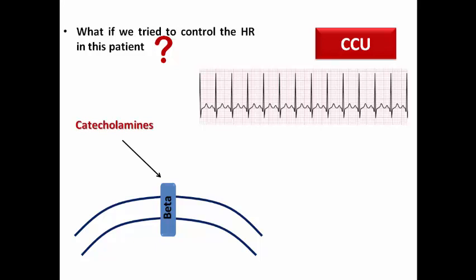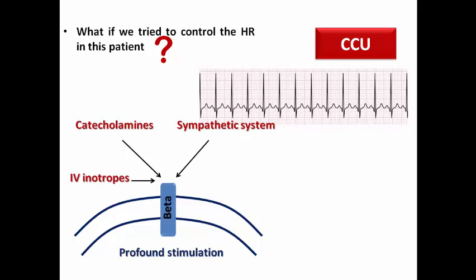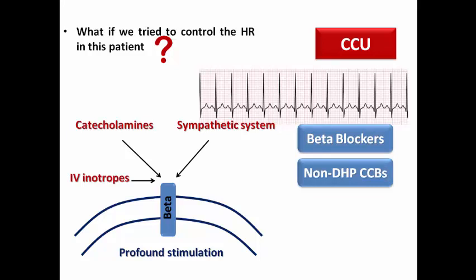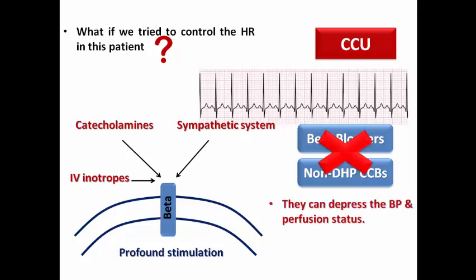There is a huge amount of catecholamines released from the adrenal medulla, heavy sympathetic stimulation, and the doctors are starting IV inotropes to try to preserve systemic vascular resistance. These three forces result in profound stimulation of beta receptors, producing a positive chronotropic effect reflected as an increased heart rate and a positive inotropic effect. So if you think to give beta blockers or non-DHP calcium channel blockers to control the heart rate here, it is absolutely wrong and dangerous because they can depress the blood pressure and the perfusion state and also reduce the heart rate, compromising the cardiac output.